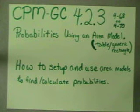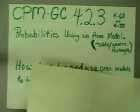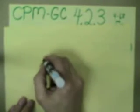An area model is basically where we draw things out. For example, if I look at a shape